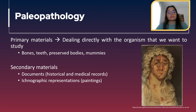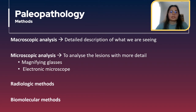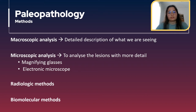We are going to focus this class on analyzing bones. There are several methods to analyze bones. We always start by simply looking at the bones, meaning making a macroscopic analysis with a detailed description of what we are seeing, and this is where we are going to focus. Then, depending on the lesions, other methods can be applied like microscopic analysis, which allows us to see the lesions in more detail.